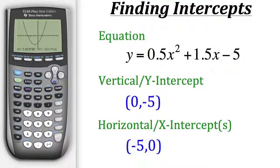So right now we're not in the zero feature anymore so we need to go back to it again. So we'll hit second trace and then go to zero. Now this time instead of looking for our left intercept we want to look for the right one. So let's scroll over there.